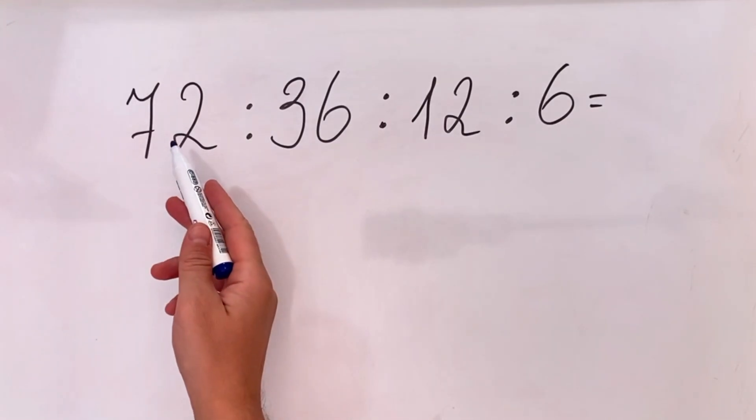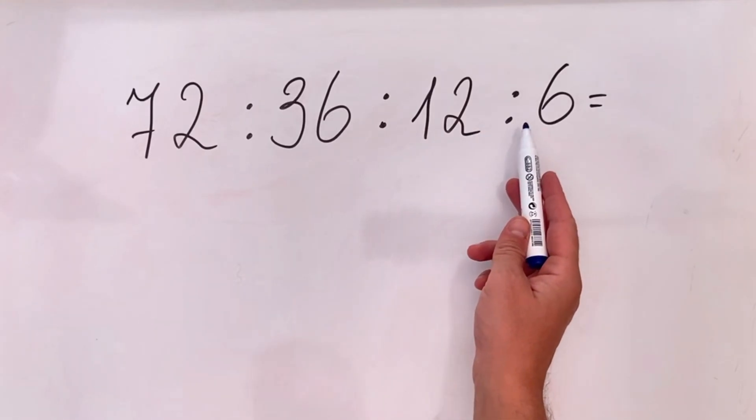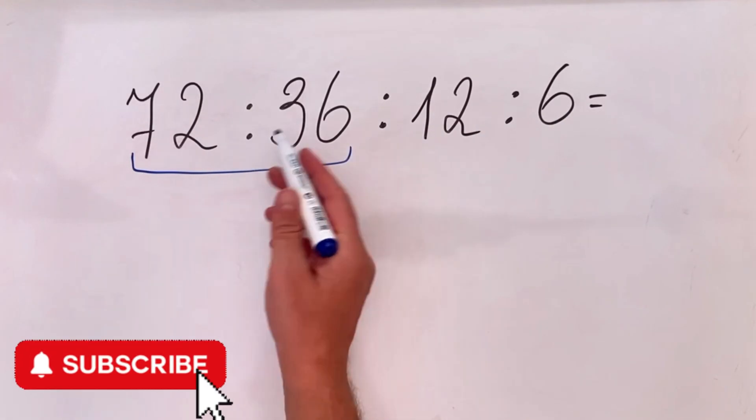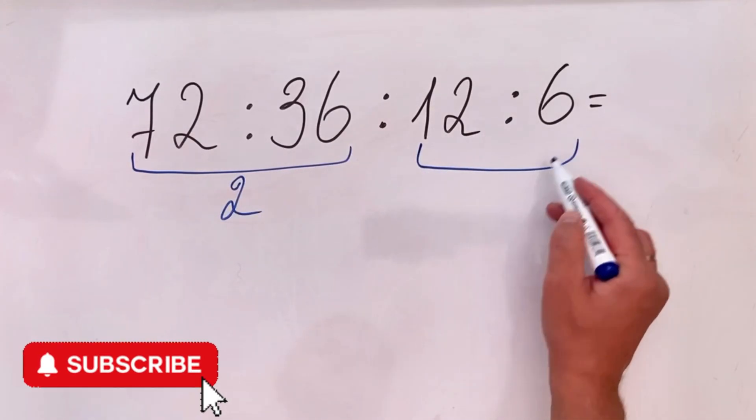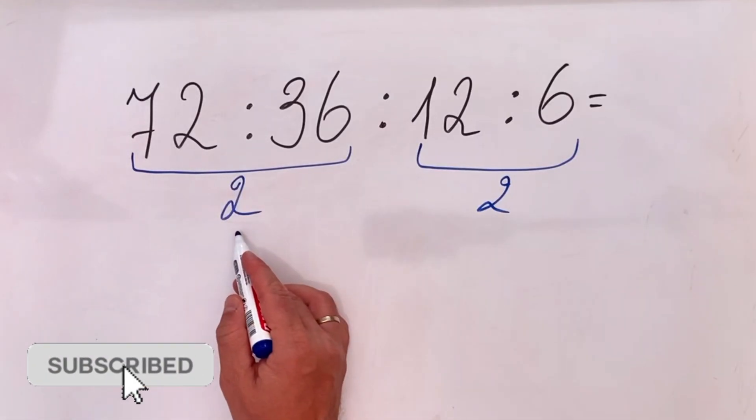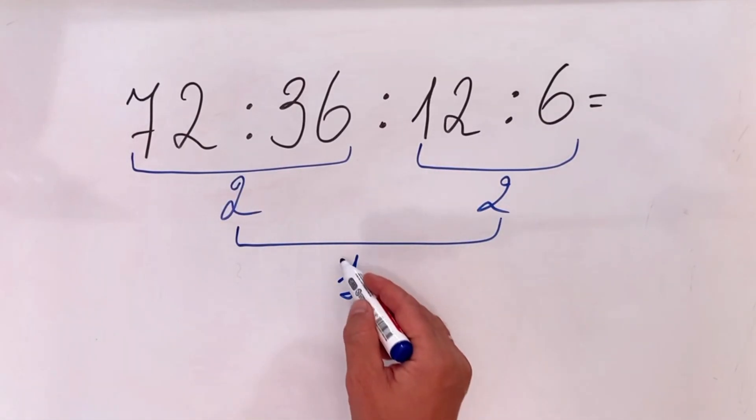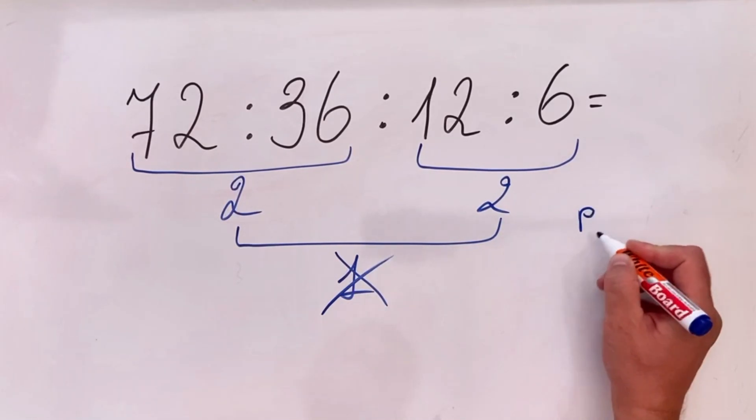Hello everyone, let's solve 72 divided by 36 divided by 12 divided by 6. Many people think 72 divided by 36 equals 2, then 12 divided by 6 equals 2 as well, and they have 2 divided by 2 which is 1. But this is of course incorrect.